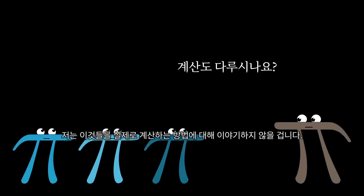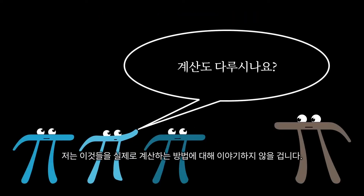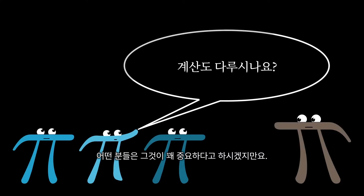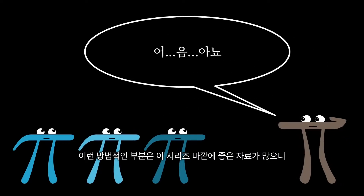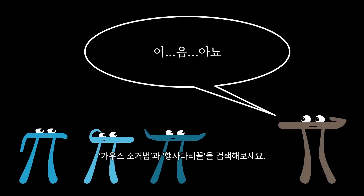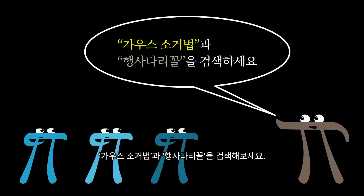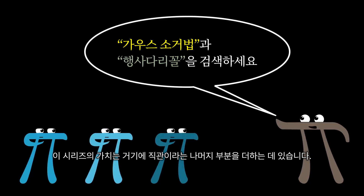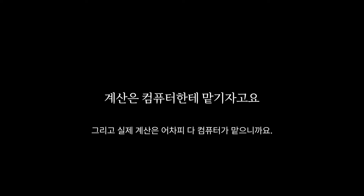A forewarning though: I'm not going to talk about the methods for actually computing these things, and some would argue that that's pretty important. There are a lot of very good resources for learning those methods outside this series — keywords: Gaussian elimination and row echelon form. I think most of the value I have to add here is on the intuition half. Plus, in practice, we usually get software to compute this stuff for us anyway.